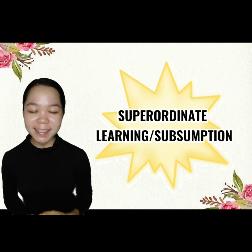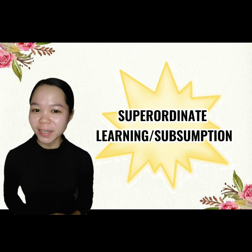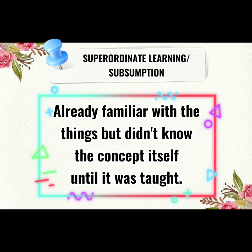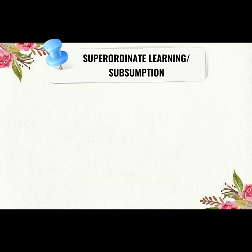Now let us proceed to the third process of meaningful verbal learning, which is superordinate learning. Superordinate learning is when you are already familiar with things but didn't know the concept itself until it was taught. Let's take this as an example: imagine you are already familiar with fruits,